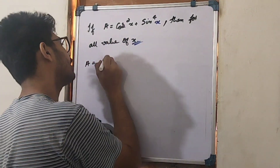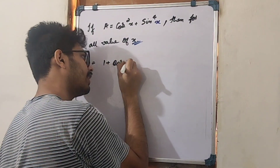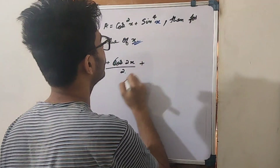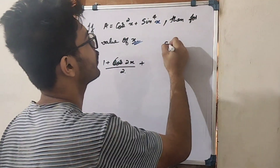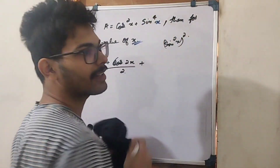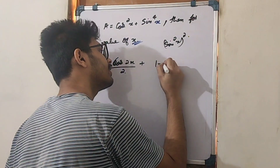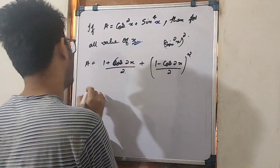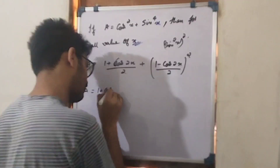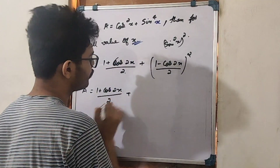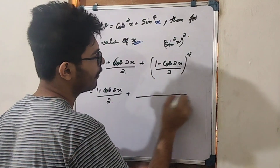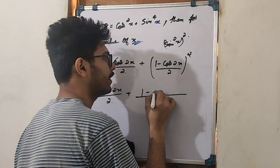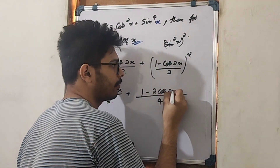A is equal to cos²x plus sin⁴x. We write cos²x as (1 + cos2x)/2. And sin²x equals (1 − cos2x)/2, so sin⁴x = [(1 − cos2x)/2]² = (A² − 2AB + B²) form with cos2x.